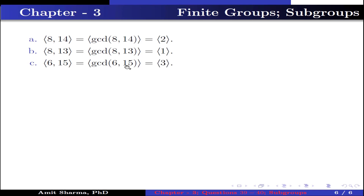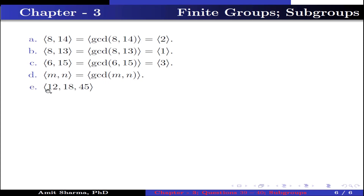Part c: the set generated by {6, 15} equals the set generated by gcd(6, 15), which equals the set generated by 3. Part d: the set generated by {m, n} equals the set generated by gcd(m, n). Part e: the set generated by {12, 18, 15} equals the set generated by gcd(12, 18, 15), which equals the set generated by 3. In each case, these are the subgroups.